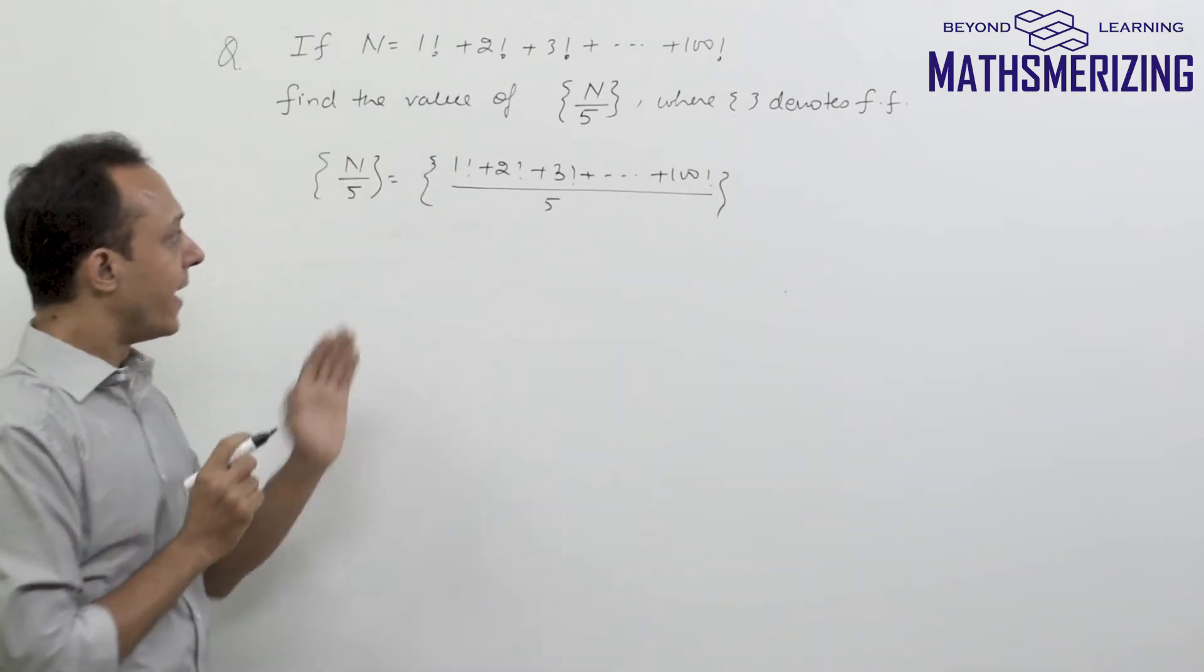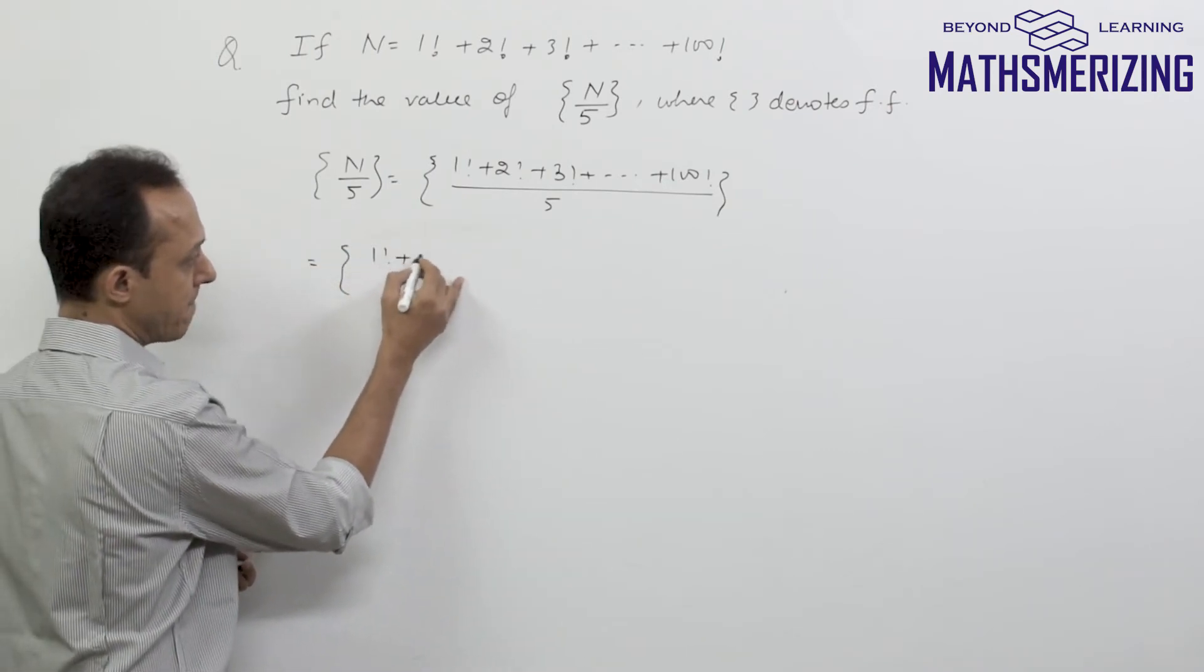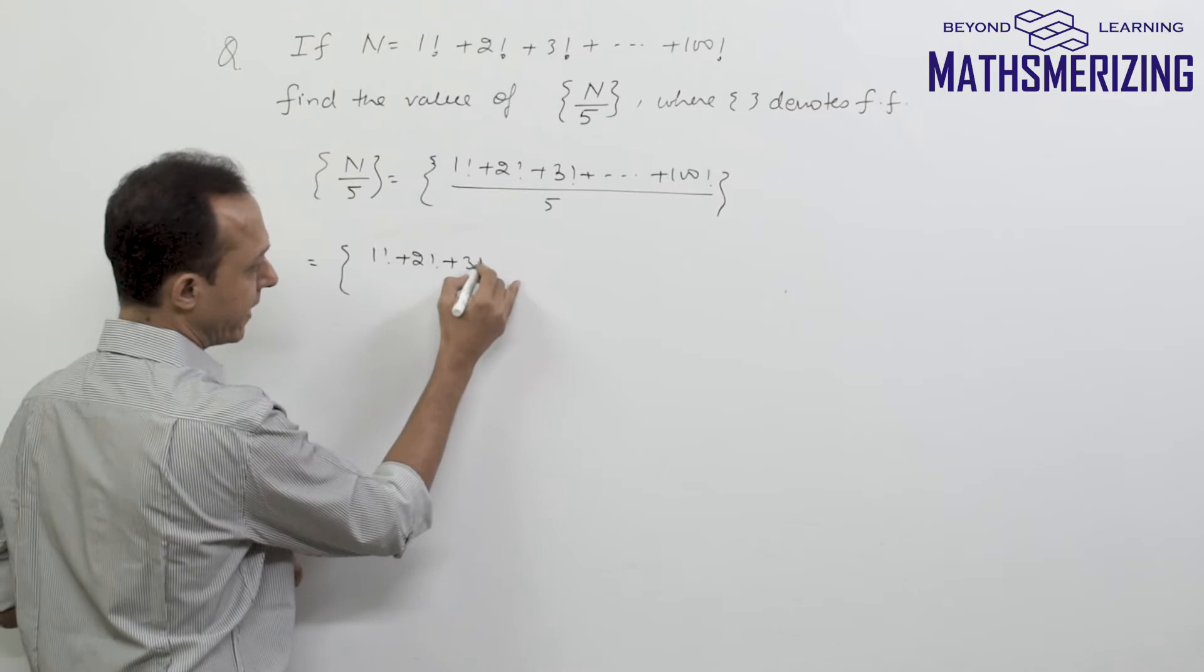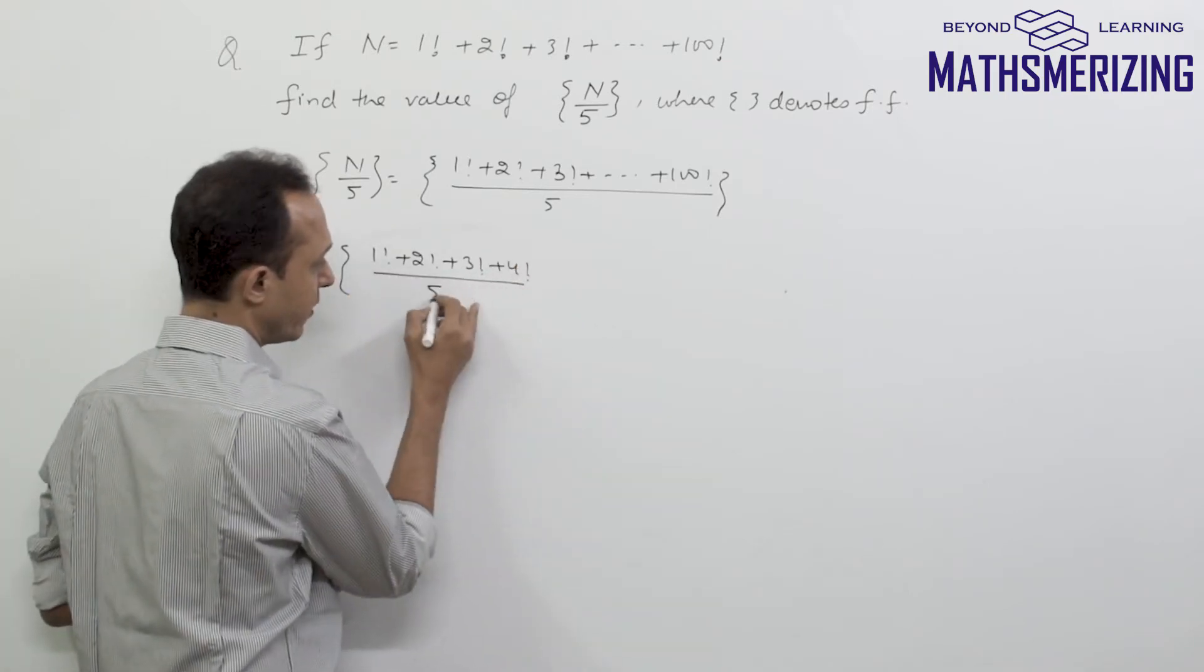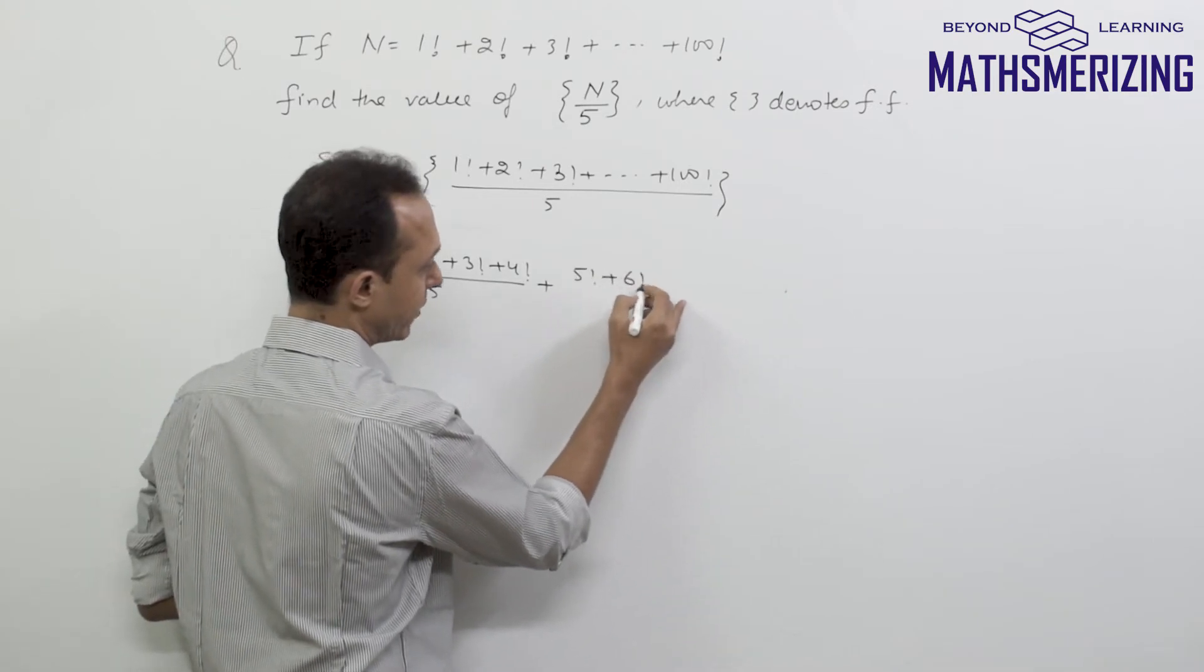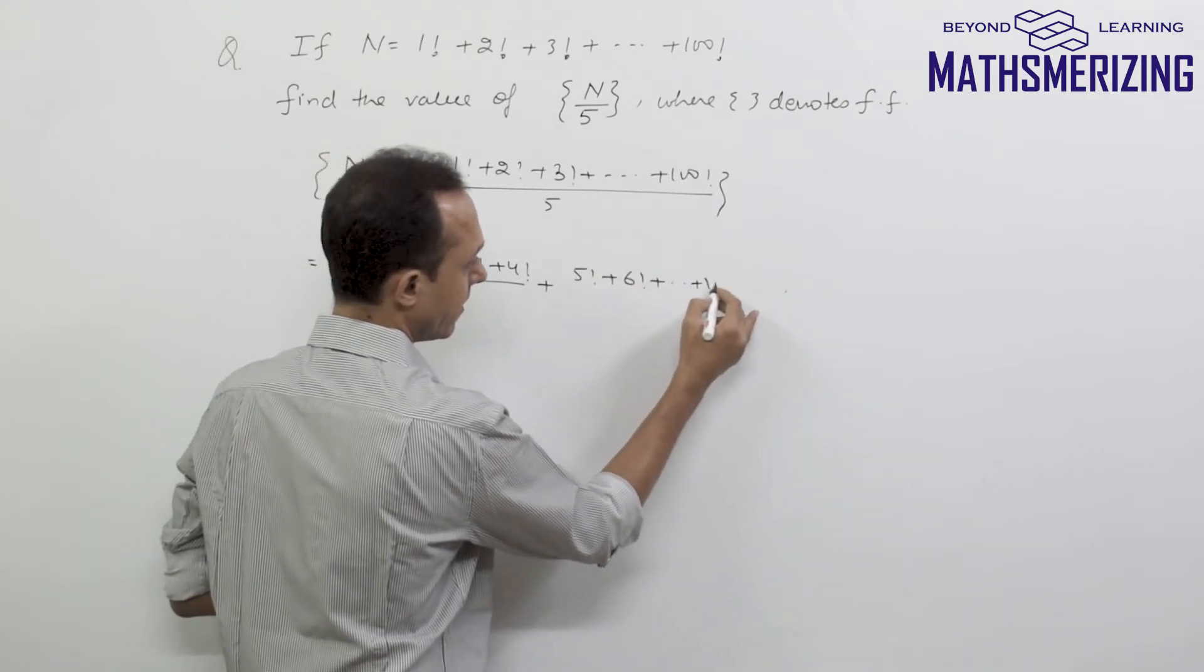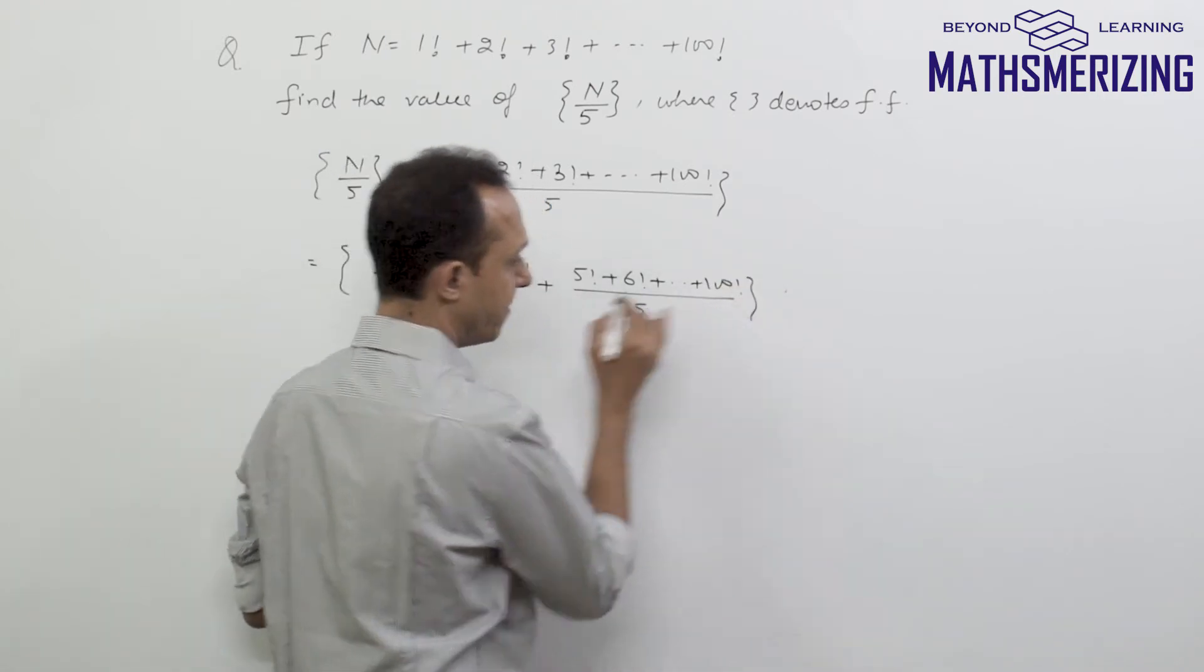Now what I'll do is I'll split it in two parts. So I'll write it as factorial 1 plus factorial 2 plus factorial 3 plus factorial 4 divided by 5, and plus factorial 5 plus factorial 6 up to factorial 100 divided by 5.